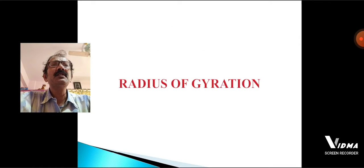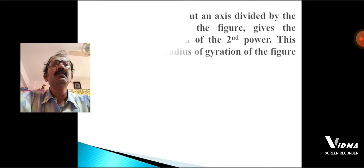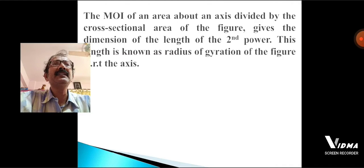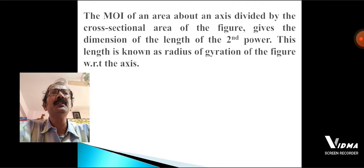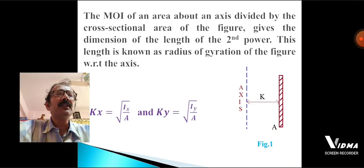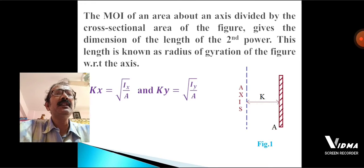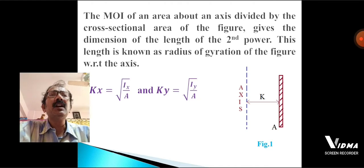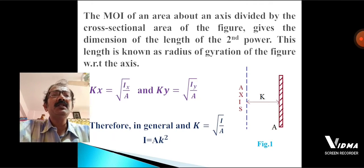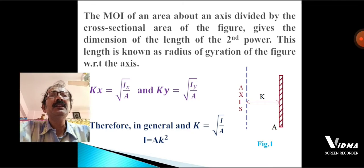Now, what is radius of gyration? The moment of inertia of an area about an axis divided by the cross-sectional area of the figure gives the dimension of length to the second power. This length is known as the radius of gyration of the figure. In figure 1, the axis is shown and A is the area in strip form, at a distance k from the reference axis. So kx = √(Ix/A) and ky = √(Iy/A). In general form, k = √(I/A), so I = Ak². This k is called the radius of gyration.